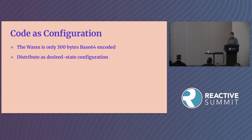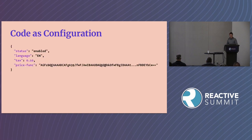One of the challenges is redistributing that WebAssembly itself — we need to get it to the edge IoT device. That WASM code is only about 300 bytes, base64 encoded, so really tiny. Why not take advantage of desired state configuration to distribute it? That's basically how IoT devices are usually managed — there's some desired state configuration synchronized from the cloud to the edge. For example, you might have desired state configuration that sets the state of the device, the language, the tax rate, and so on. Then just include another string with the base64 encoded WebAssembly.